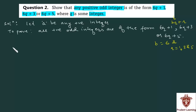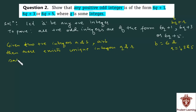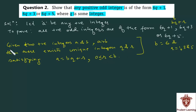For solving this question, let us recall Euclid's division algorithm, which states that for given two positive integers a and b such that a is greater than b, there exist unique integers q and r satisfying a is equal to bq plus r, where r is greater than or equal to 0 and less than b. We will apply this algorithm to our problem.